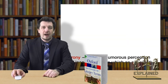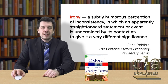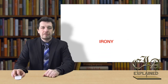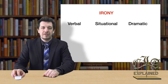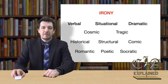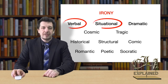Nowadays, irony is generally understood as a subtly humorous perception of inconsistency that gives a statement or an event a very different significance. Very often, irony is divided into three types: verbal, situational, and dramatic. But the term has a very long history and throughout its history, irony acquired different meanings depending on the time period or the author, and one can find many other subtypes of irony. In this video, we will discuss only these three types.